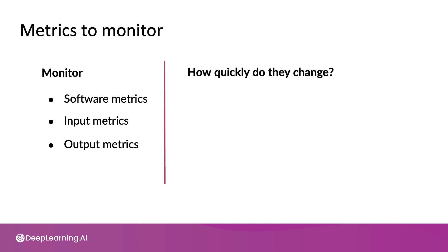How quickly does data change? The rate at which data changes is very problem dependent. For example, if you built a face recognition system, the rate at which people's appearances change usually isn't that fast — people's hairstyles and clothing do change with fashion, and cameras have been getting higher resolution over time — but for the most part, people's appearances don't change that much. But there are sometimes things that can change very quickly, such as if a factory gets a new batch of material for how they make cell phones and all the cell phones start to change in appearance. So some applications will have data that changes over timescales of months or even years, and some applications will have data that could suddenly change in a matter of minutes.